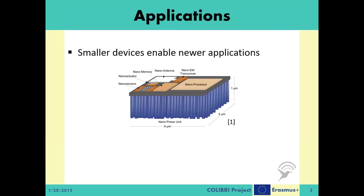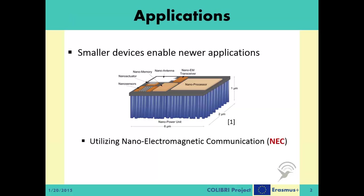As we described in the previous video, with the advent of newer, smaller devices that can communicate in the nanoscale, there will be novel applications for these kinds of machines. Because of their smaller sizes compared to the current generation of devices, they will be able to work in places where the current devices are either unable to work or work very inefficiently. We differentiate these applications into two groups based on the underlying selected nanonetworking approach: applications utilizing nanoelectromagnetic communication, in short NEC, and applications utilizing molecular communication, MC.